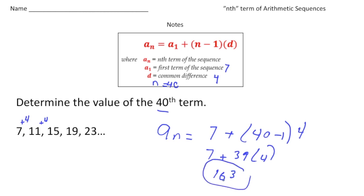So 163 would be the 40th term of our arithmetic sequence. Now that you know how to use the formula, why don't you pause the video and try the 'your turn' problem now. When you're done, hit play and see how you did. Good luck.